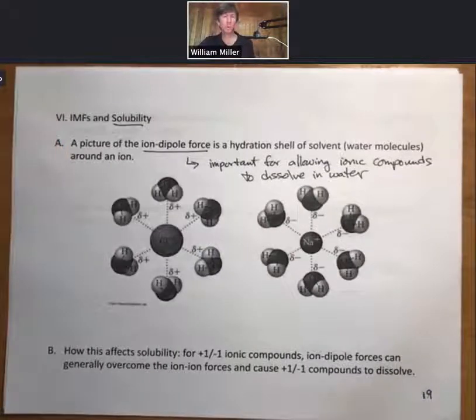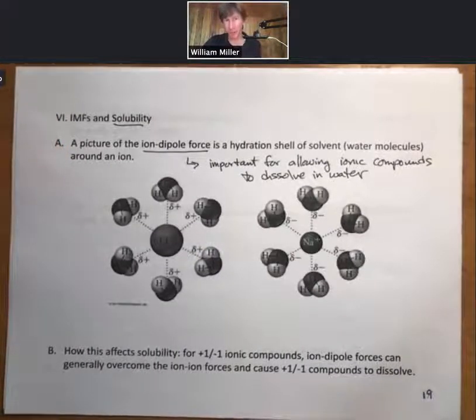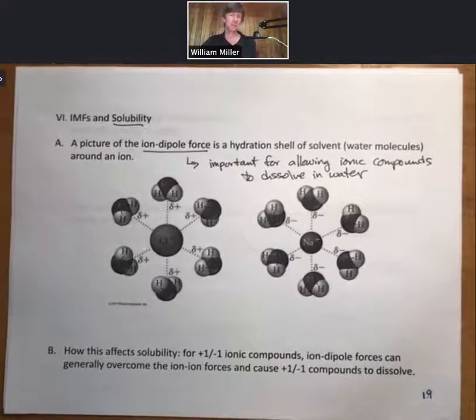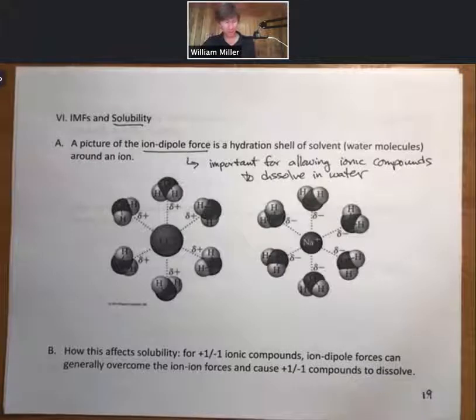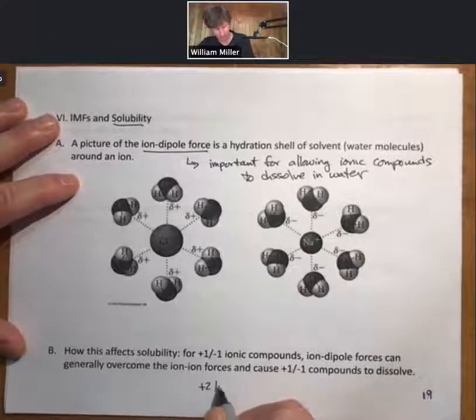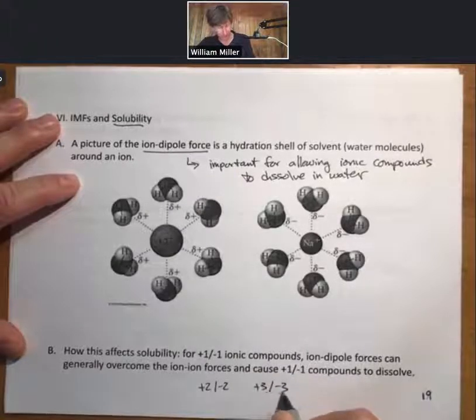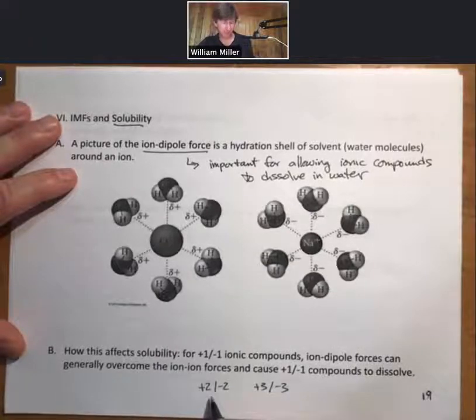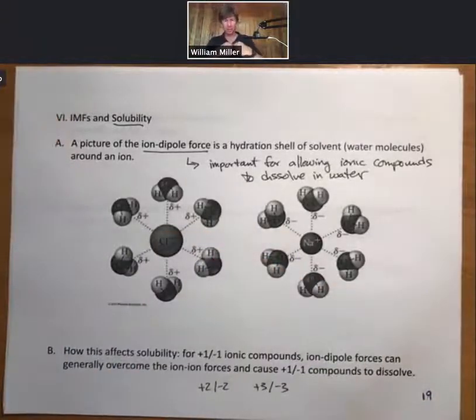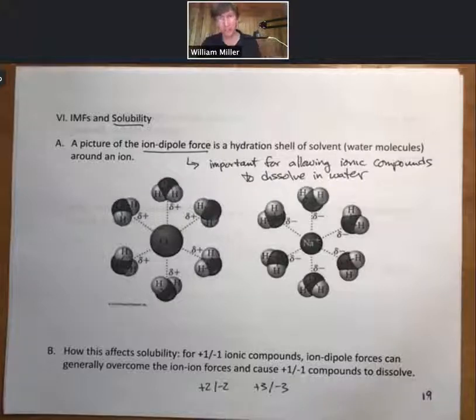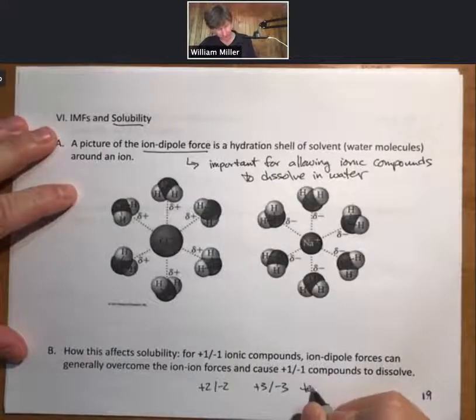That's a quick and dirty summary of your solubility rules. It's not 100% accurate because there are some plus 1, minus 1s that are insoluble, and some other compounds with other charges that are soluble. But plus 1, minus 1 tends to be soluble. Plus 2, minus 2 have 4 times the ion-ion forces. That's too much for these partial water hydration shells to overcome the charges, so they tend to be insoluble.